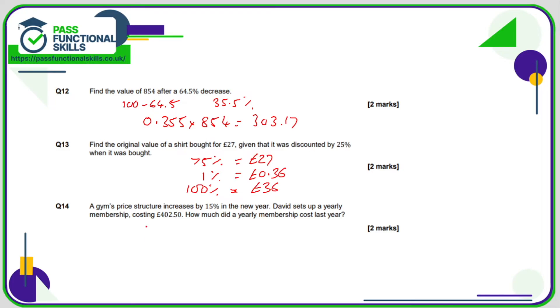So, question 14, a gym's price structure increases by 15%. David sets up a yearly membership costing £402.50. So how much did a yearly membership cost last year? So what we know is that it's been increased by 15%. So let's say it was 100% before, now it is 115%. So 115% equals this new amount of £402.50.